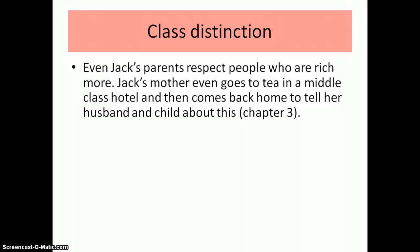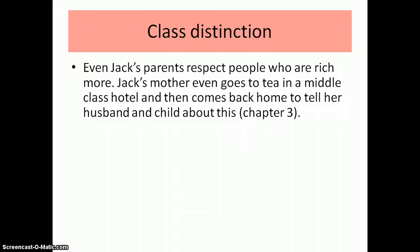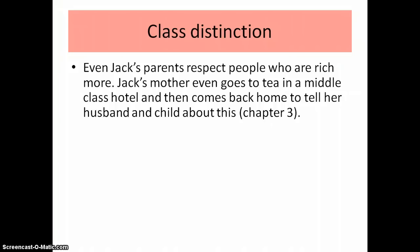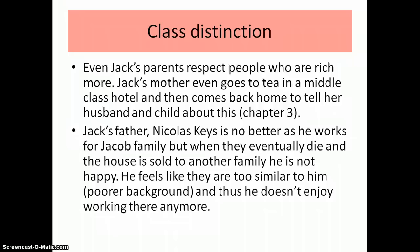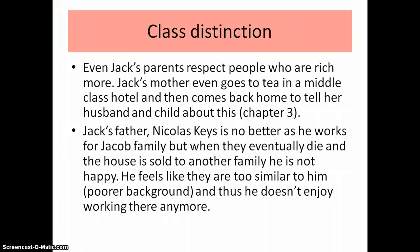We can see that even Jack's parents respect people who are rich a little more than others. Jack's mother visits a middle-class hotel and comes back to tell her husband and child about it, because to her it's a once-in-a-lifetime outing — this happens in chapter 3. Even Nicholas is no angel, because when the Jacob family dies and the house is sold to a new family, he isn't happy because he feels they're too similar to him — almost working class — and he says he doesn't really like working for his own kind, which is very interesting.